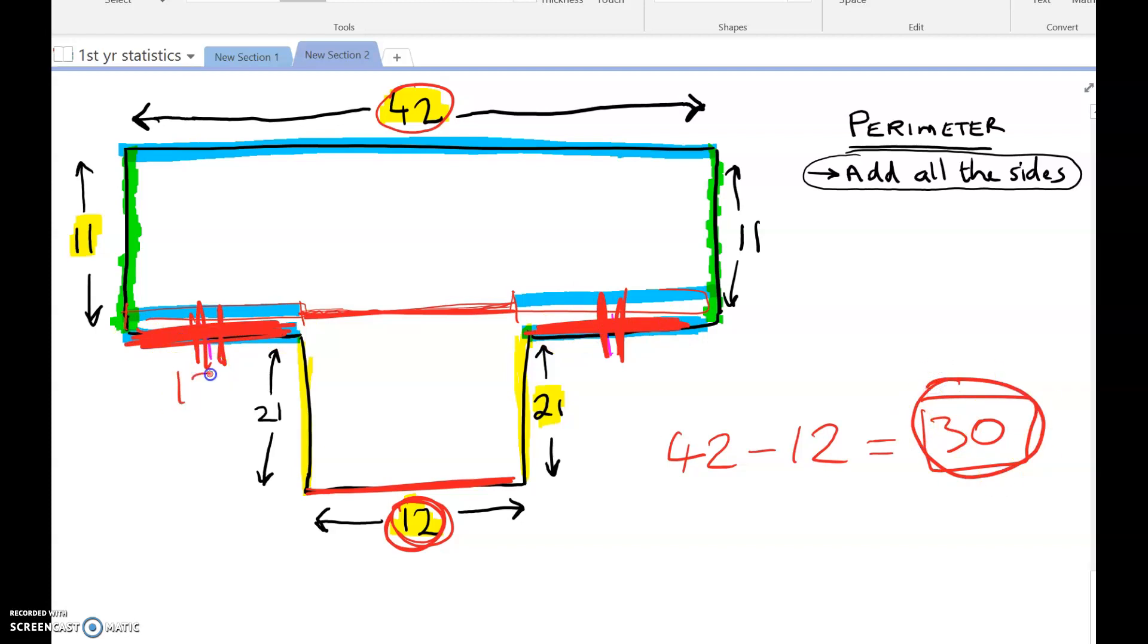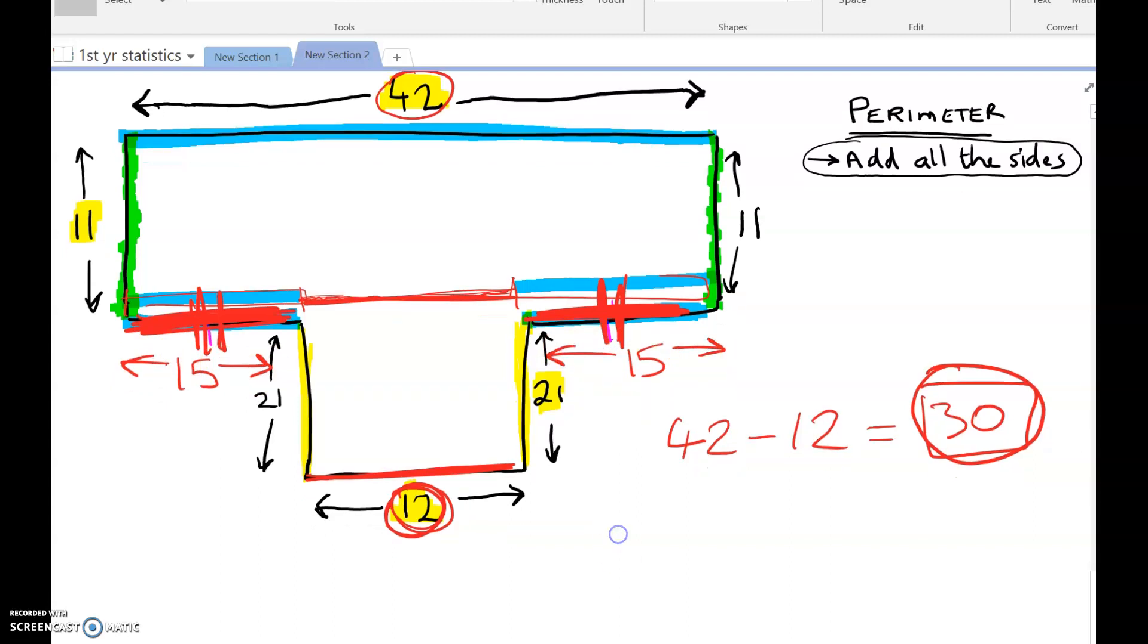So that must mean they're 15 each, because 15 and 15 is 30. Now we can get the perimeter, remember to get the perimeter you add all the sides together. So we have to go through it very slowly. We'll start up here: 42 plus 11. I always circle them when I'm doing them so that I don't forget that I've done them.